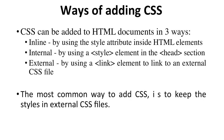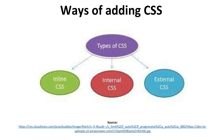Third is external, where we use a link element to link to an external CSS file. This file is located at an external location and linked from the HTML document. The most common way to add CSS is to keep styles in external CSS files. The three types are inline CSS, internal CSS, and external CSS.